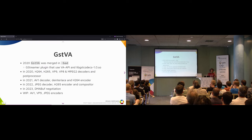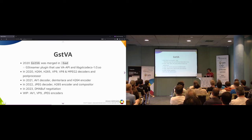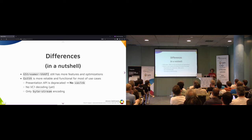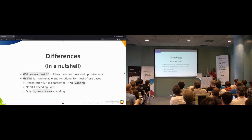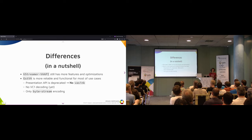One important thing — as Tim already mentioned at the beginning of the day — in main branch we have demoted the GstVAAPI elements to rank none and promoted the GstVA elements to primary or secondary depending on how much we trust that specific element. The big differences in a nutshell between GstVAAPI and GstVA: GstVAAPI has more features and optimizations, but it's quite bleeding edge and breaks the user experience for many common use cases. Opposite to that, GstVA is more reliable and most functional for the majority of use cases — basically more suitable for consumption by normal users.